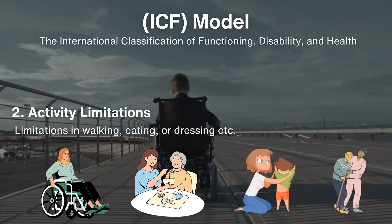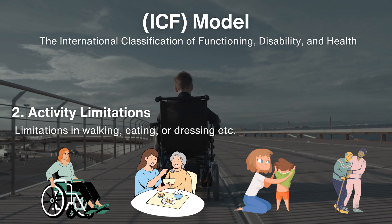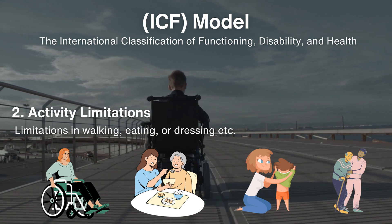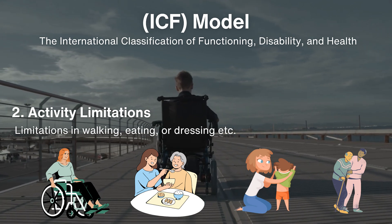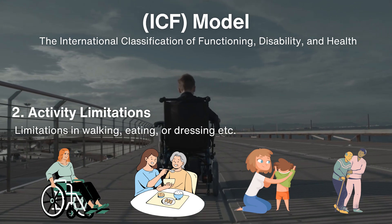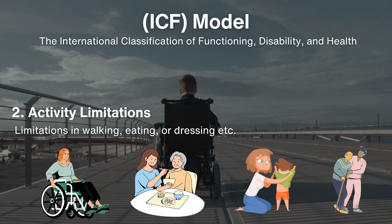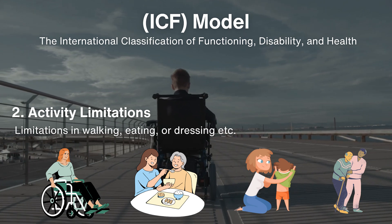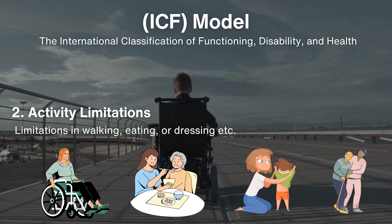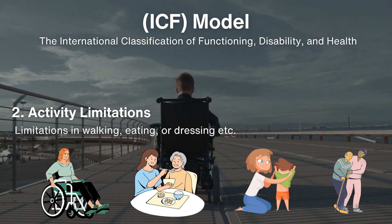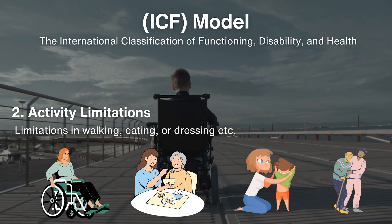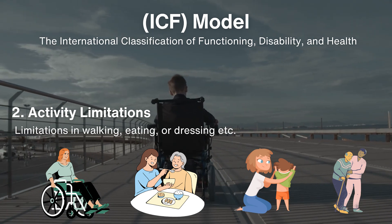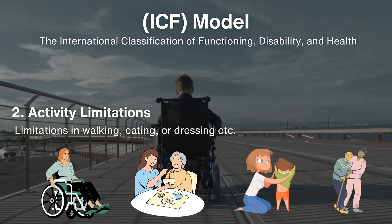The second component is activity limitations. In this category, all the daily activities that a patient does or wants to do but requires assistance and cannot do independently are listed — like walking, dressing, eating, etc. These activities will later be used as goals of rehabilitation.